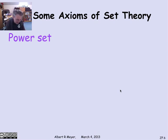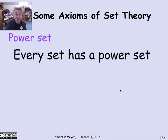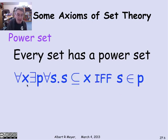Another one is the power set axiom, which simply says that every set has a power set. How would you say that in the language of predicate set theory? You'd say that for every x, there is a p, which is going to be the power set of x, such that for every set s, s is a subset of x if and only if s is a member of p.